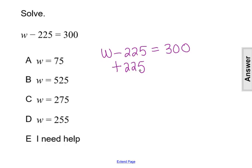But if I'm adding 225 to the left side of the equation, I have to also add it to the right side of the equation. I have to keep that equation balanced.